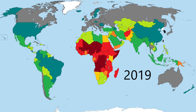Hey everybody, it's time for another one of those maps of something over time. In particular this time, fertility rate, usually measured as the average number of children per woman over her lifetime.